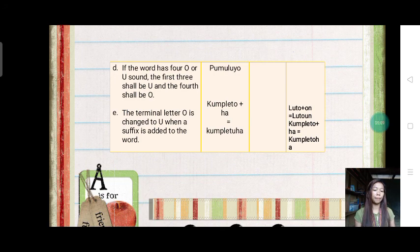In letter d, pareho lang sa letter c. Kahit ilang syllable pa yan, the first, second, third, and fourth will always be u. But the last syllable will always be o.